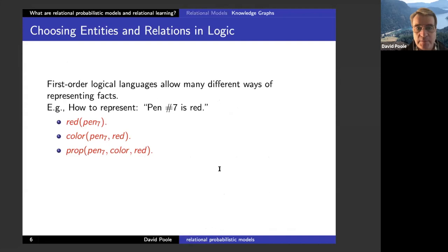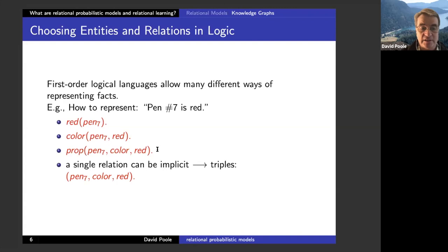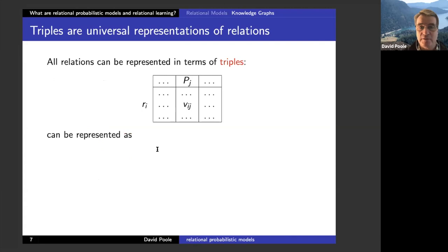Lots of ways of representing facts. For example, 'pen seven is red' — you could write it as red(pen7), but then you can't query the color of pen seven in first-order logic. In Prolog, you could write color(pen7, red), and now you can query both what is red and what is the color of pen seven. We can reify 'color' further and get prop(pen7, color, red), arriving at what are called triples. A single implicit relation gives you triples, and all relations can be represented this way.